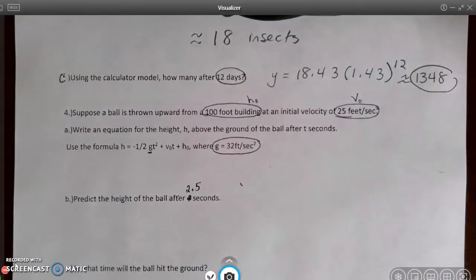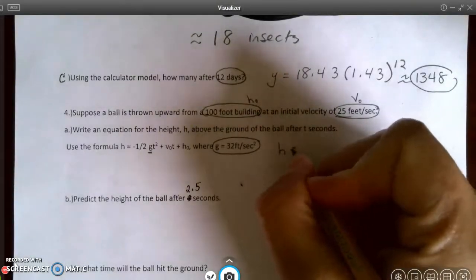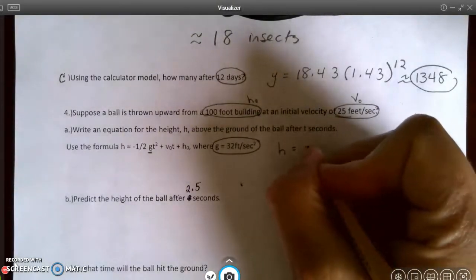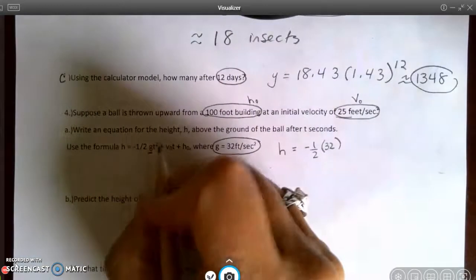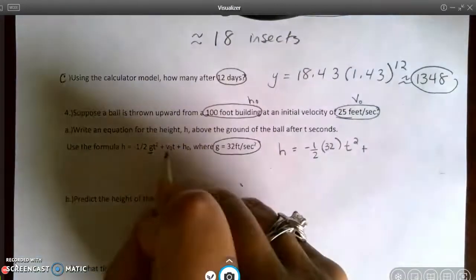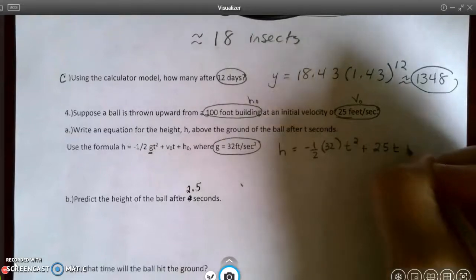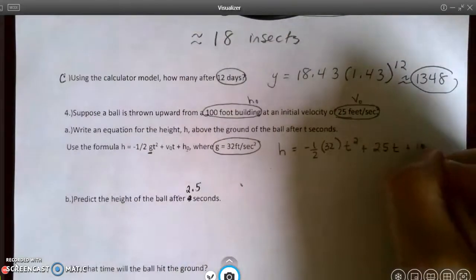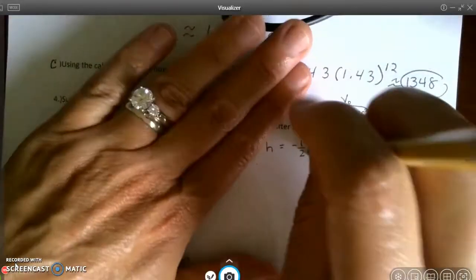t is my unknown in my equation. And I have h equals negative 1 half times 32. That's my g. t squared plus my initial velocity, which is 25. t plus my initial height, which is 100.